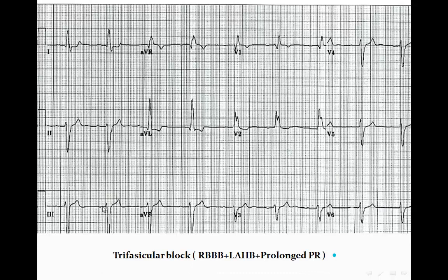However, there is right axis deviation, which should not be present in normal right bundle branch block. Leads III, aVF, and II are to the negative side, indicating left axis deviation. So we have right bundle branch block and left axis deviation, and also prolongation of the PR interval — meaning first degree heart block as well. The combination of right bundle branch block plus left axis deviation plus prolongation of the PR interval is trifascicular block.